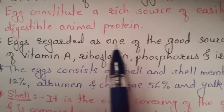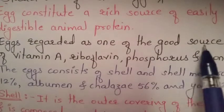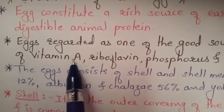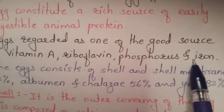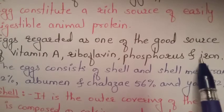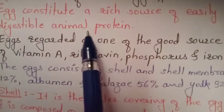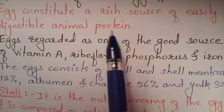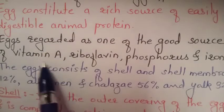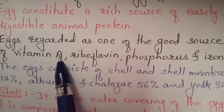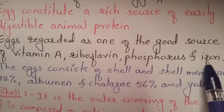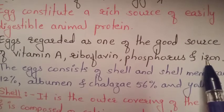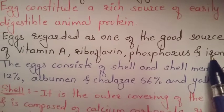Eggs are regarded as one of the good sources of vitamin A, riboflavin, phosphorus and iron. Not only protein is present in the eggs, but it also contains vitamin A, riboflavin, phosphorus and iron.